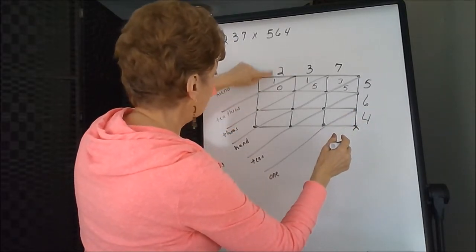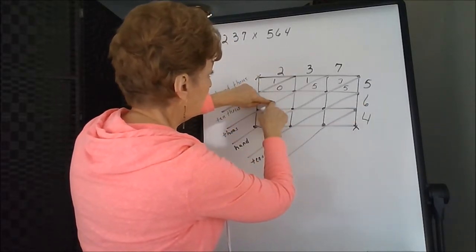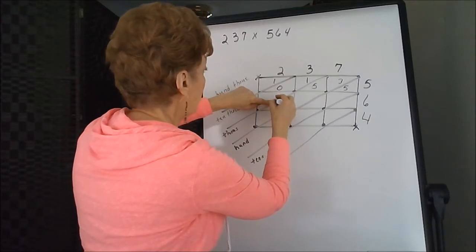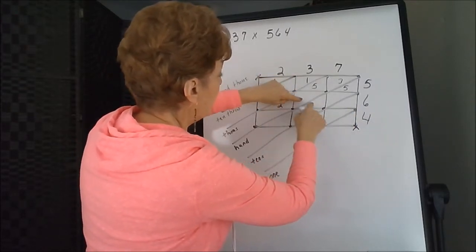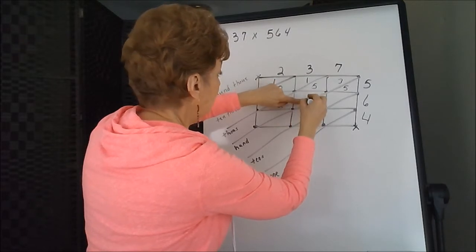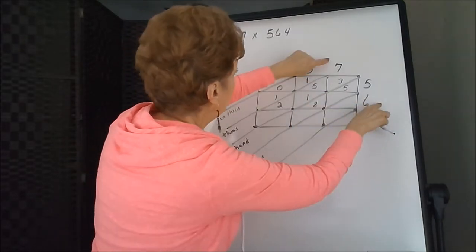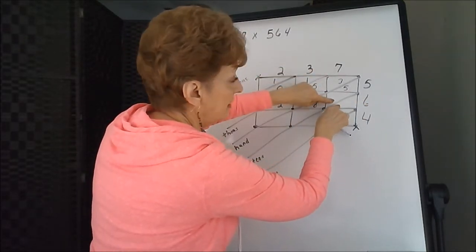This box is the two joined with the six. Two times six is twelve. Three times six is eighteen. Seven times six is forty-two.